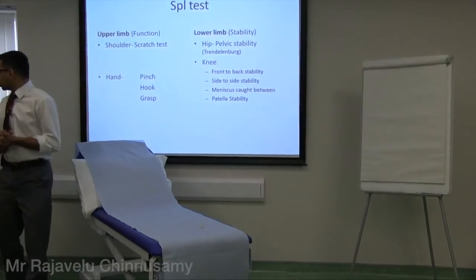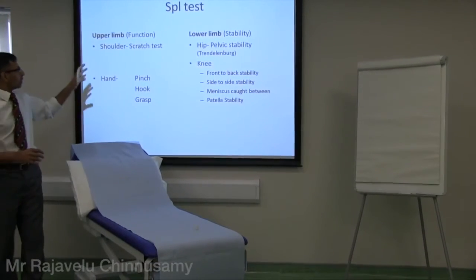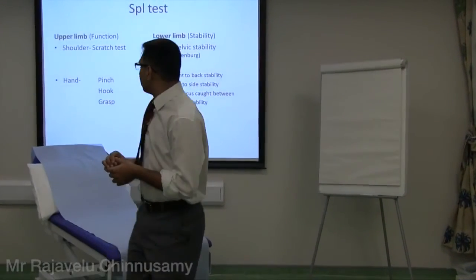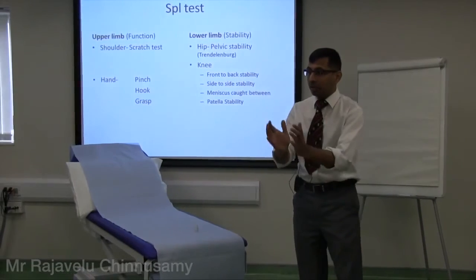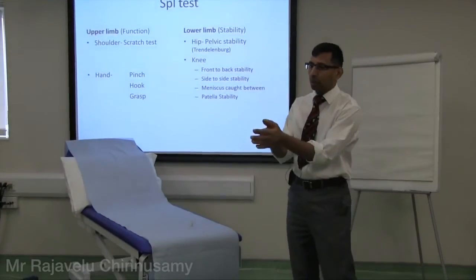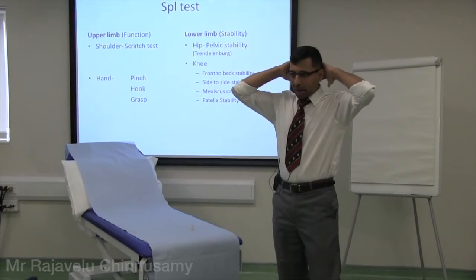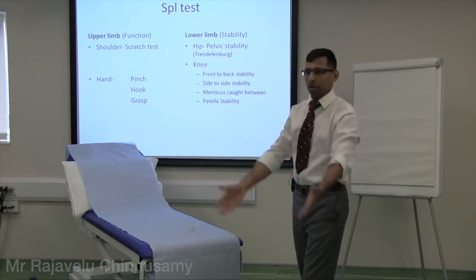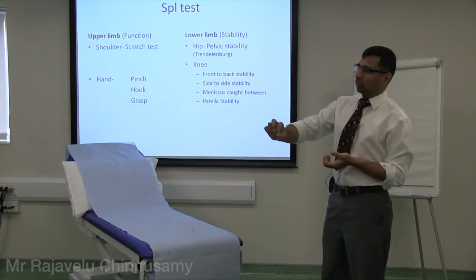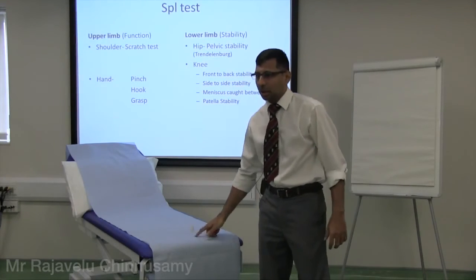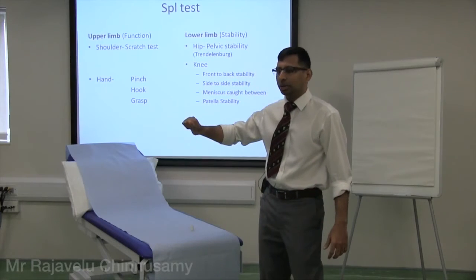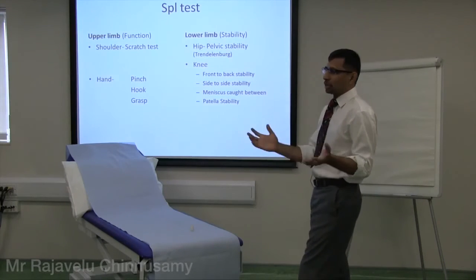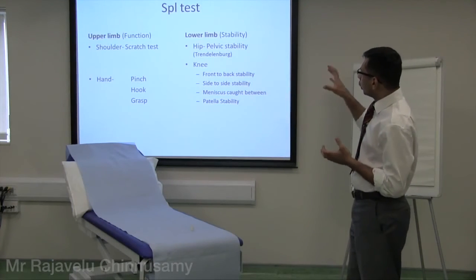For special tests — generally, if it is upper limb you assess function. At the end of your examination, you want a functional assessment to see how much to improve. For the shoulder, it is typically a scratch test: reaching back for grooming and for dressing. For the hand, whether they are able to pick up a coin, pick up a key, perform a side pinch, open a door with a hook grip, and grasp a bottle. Imagine a sequence so that you remember the function.